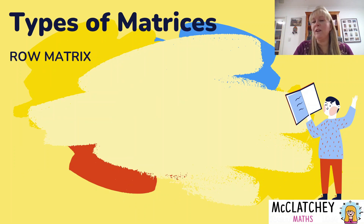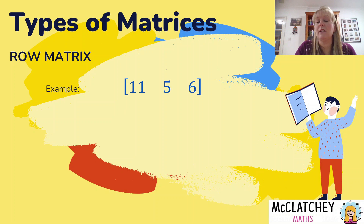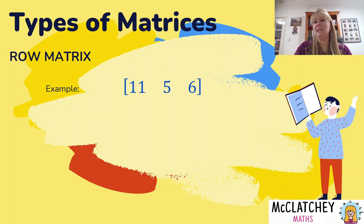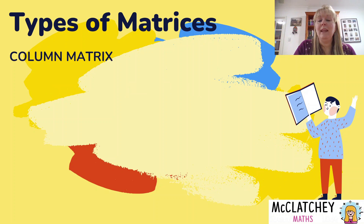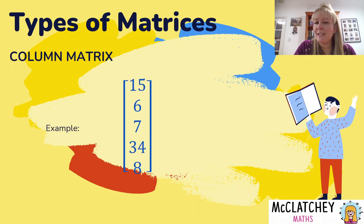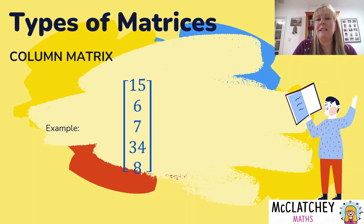Now I'm going to talk to you about some different kinds of matrices — there are some special matrices with special features. The first one is a row matrix: it's quite simply a one row matrix. It could have 50 different elements in that row, but it's a single horizontal row. Following from that, a column matrix is a single column matrix — it could have many different elements in the column, but it's a single column.